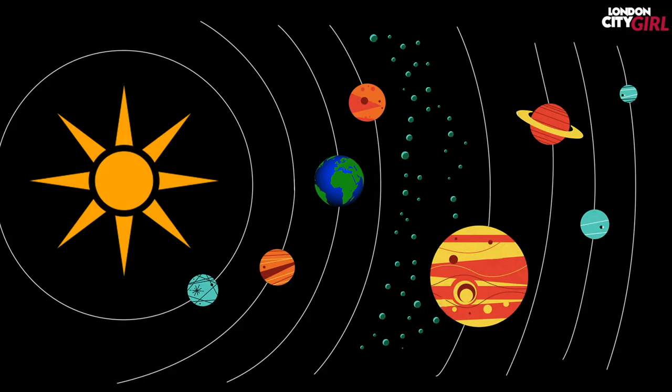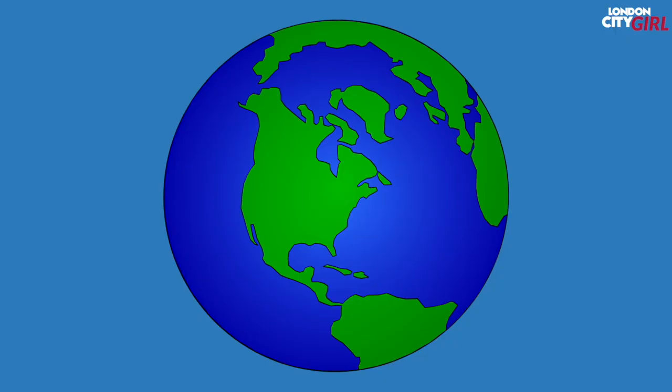Earth is the only planet in our solar system that has a large amount of liquid water. If we were any closer to the Sun the planet would not be able to cool down enough to have liquid water on its surface and if we were any further away the water would be frozen in ice. The prevailing theory of how Earth got its water is that it came from the dust, gas and ice that formed the planet as well as visiting comets and asteroids which were covered in sheets of ice. About 70% of our planet Earth is covered in water.